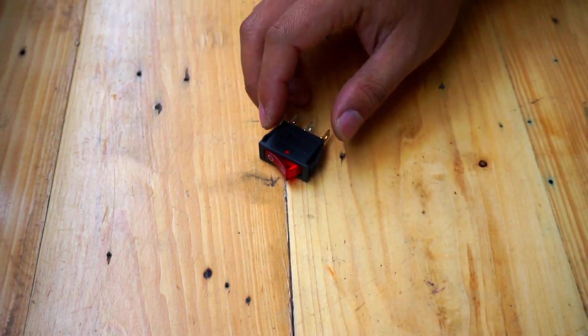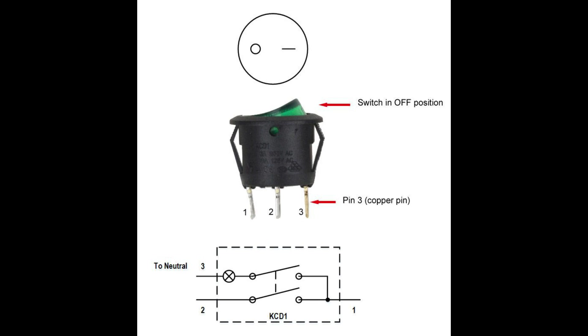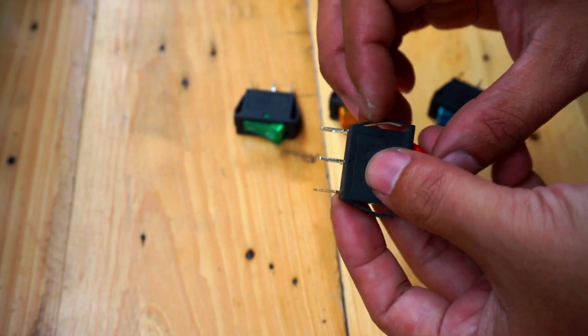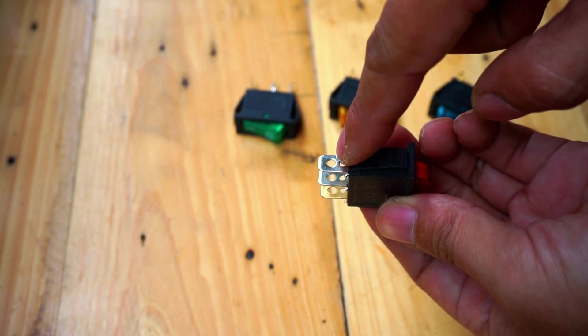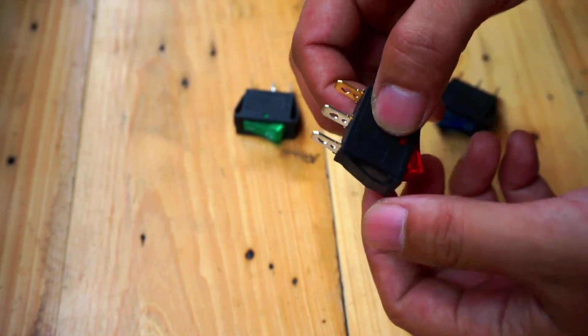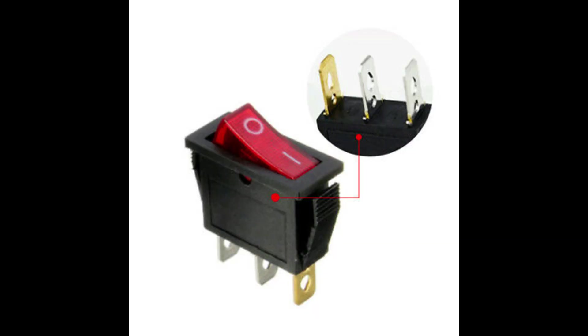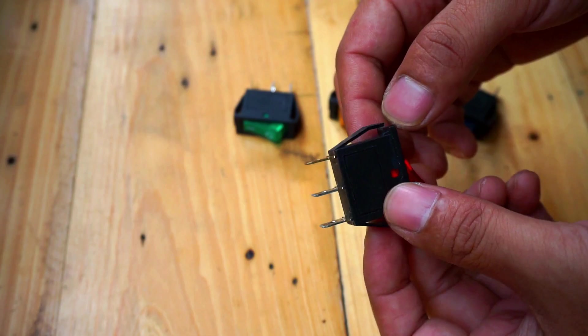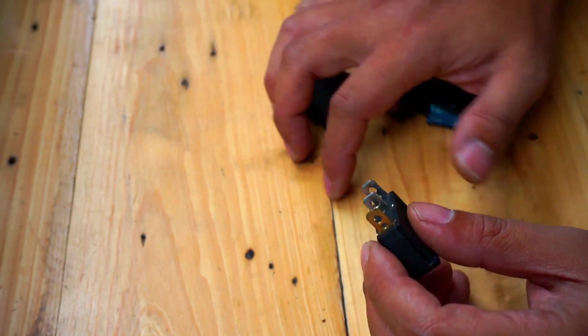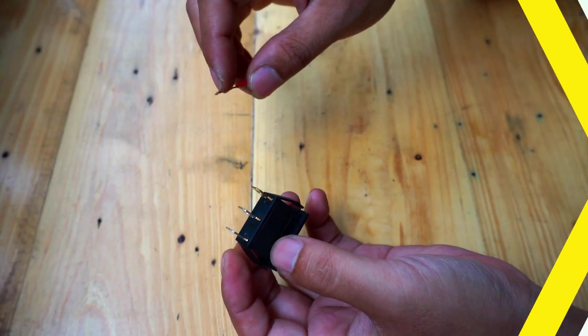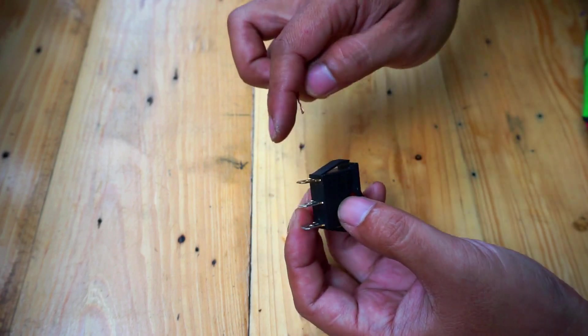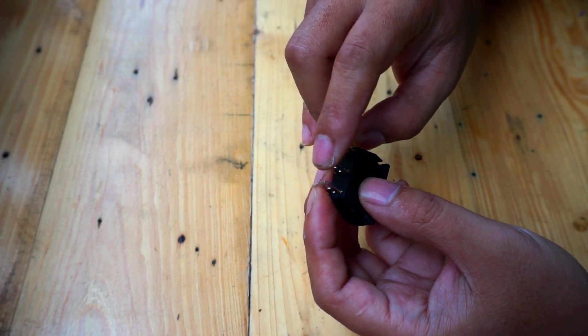To wire this DC rocker switch we have to pay attention to these three pins. If we take a closer look we'll notice that there is one pin which is different from the other two. That's the copper pin and that's for the positive input and output. Now we are going to attach a wire to the positive input of the switch, the copper pin. We are going to connect this wire to the DC source.